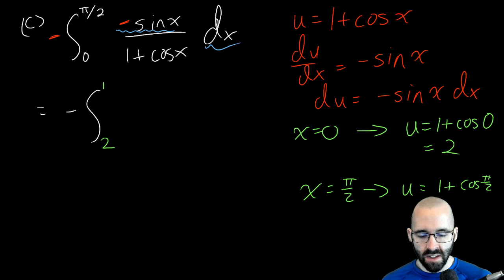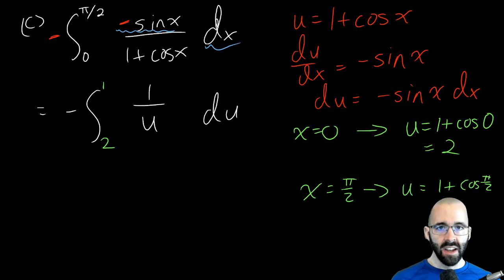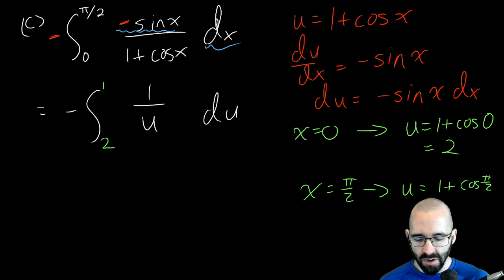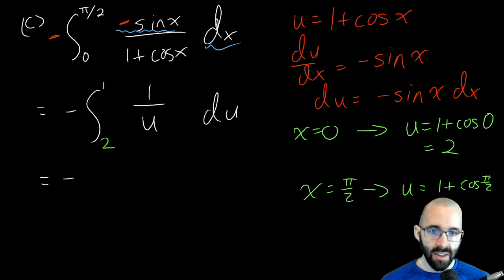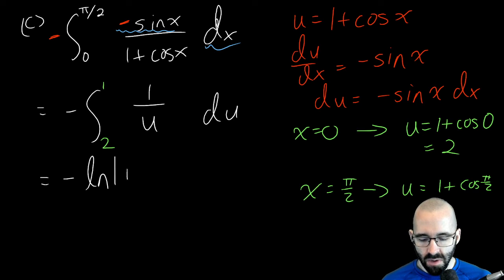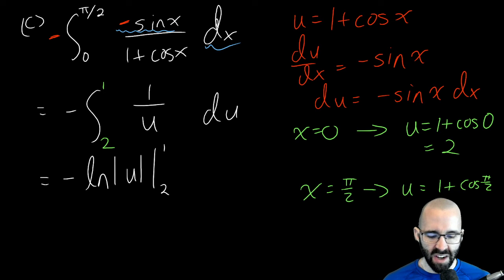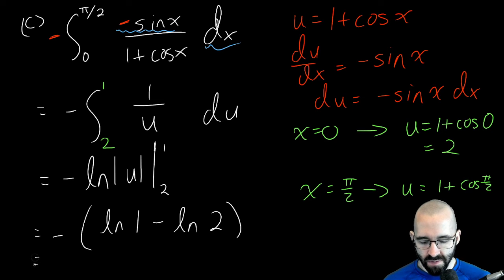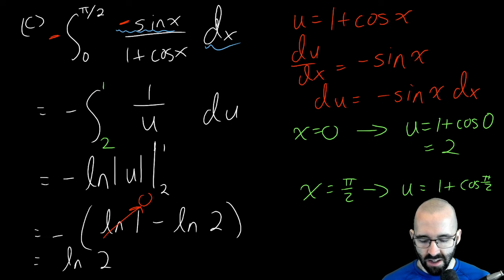The integrand reduces to −∫₂¹ (1/u) du = −[ln|u|]₂¹ = −(ln(1) − ln(2)). Since ln(1) = 0, this becomes −(−ln 2) = ln(2). So the area under the curve from 0 to π/2 is ln(2).